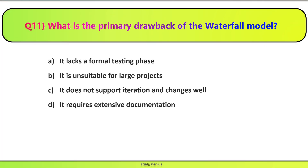Question 11. What is the primary drawback of the waterfall model? Waterfall model ka primary drawback kya hai? Correct answer is C. All the options available here are drawbacks of the waterfall model, but the primary drawback is Option C: the waterfall model does not support iteration and changes well.